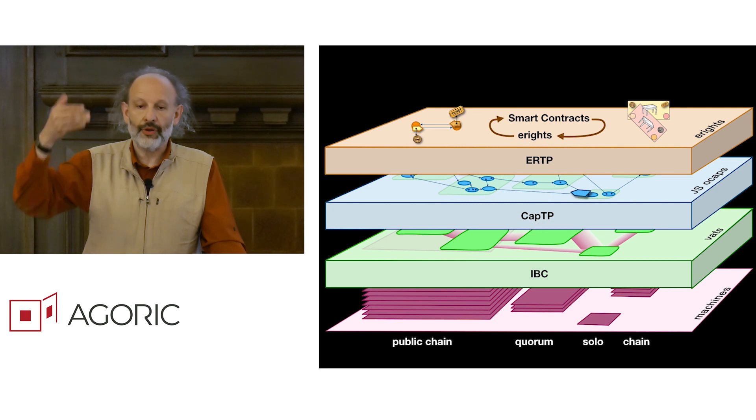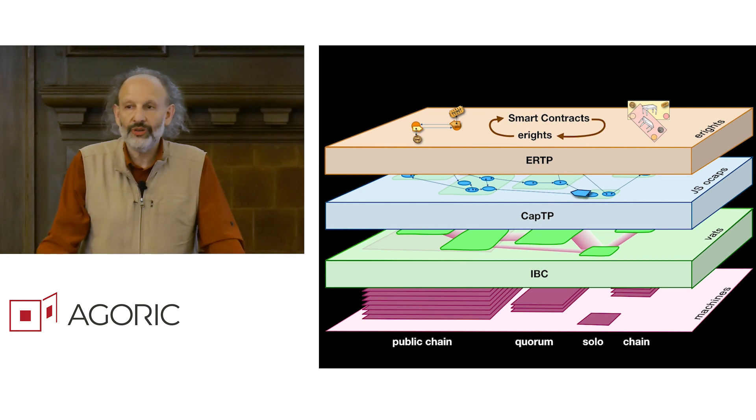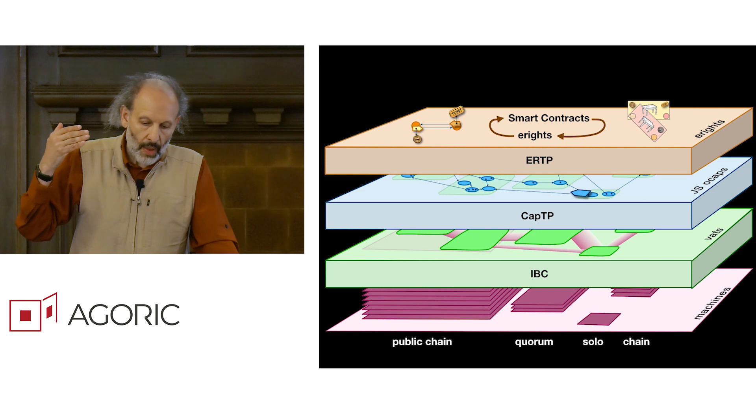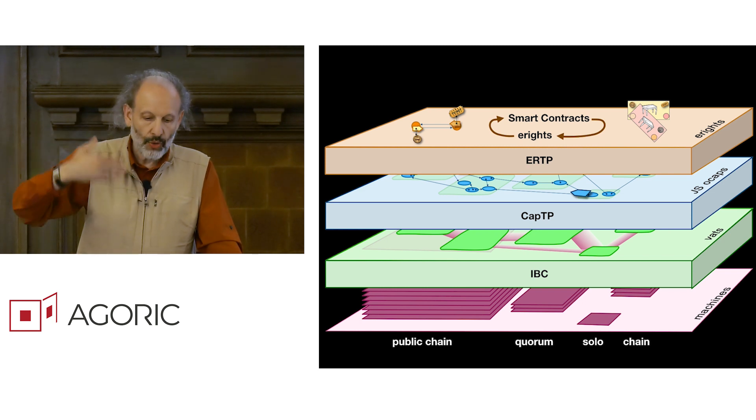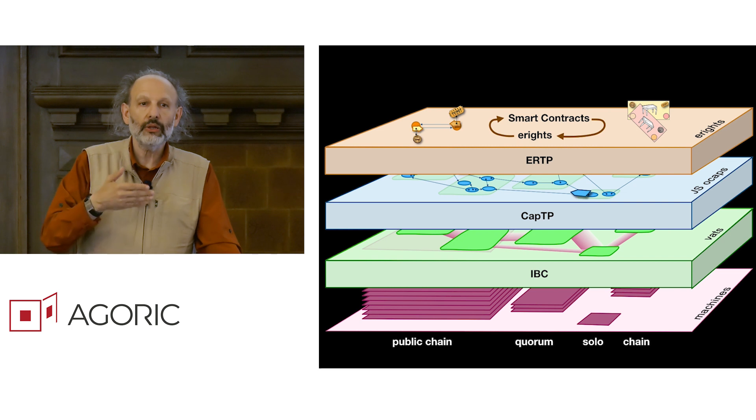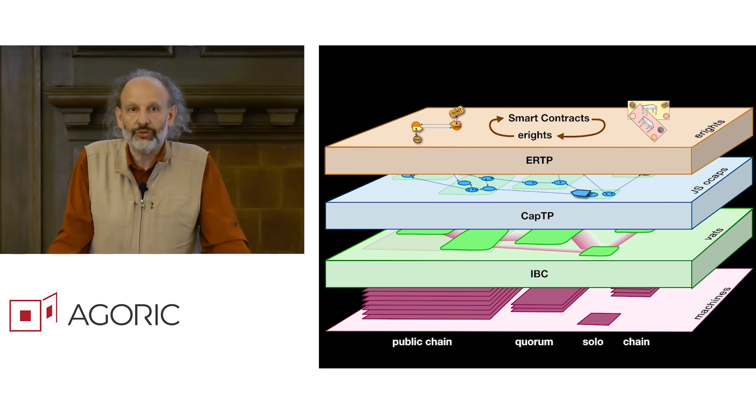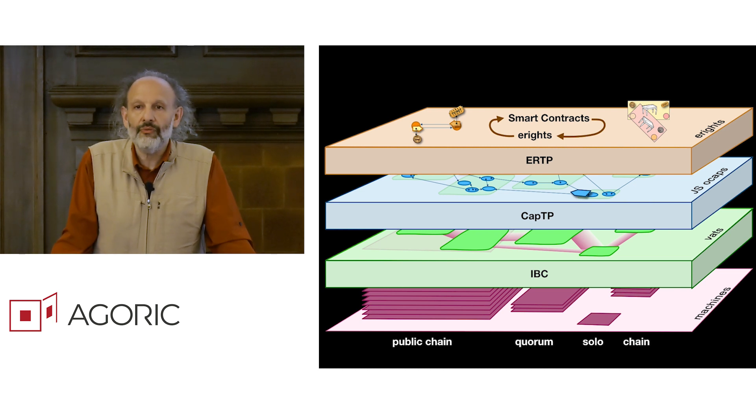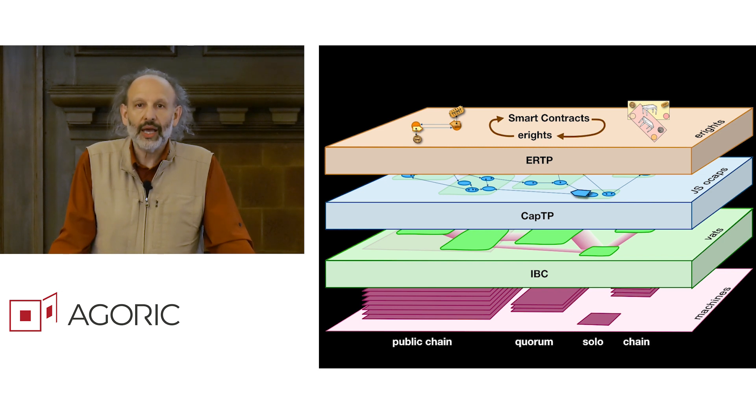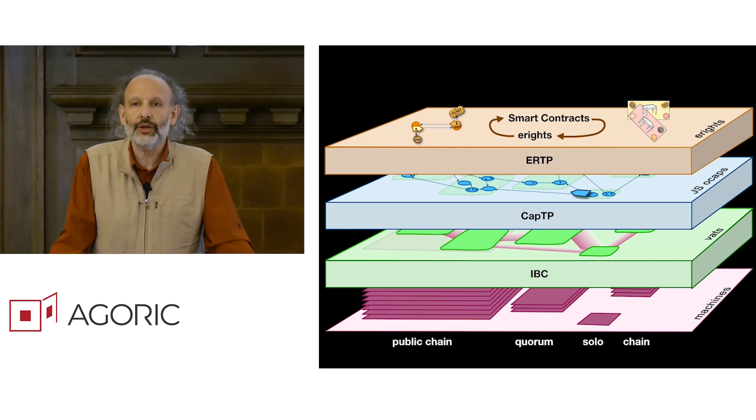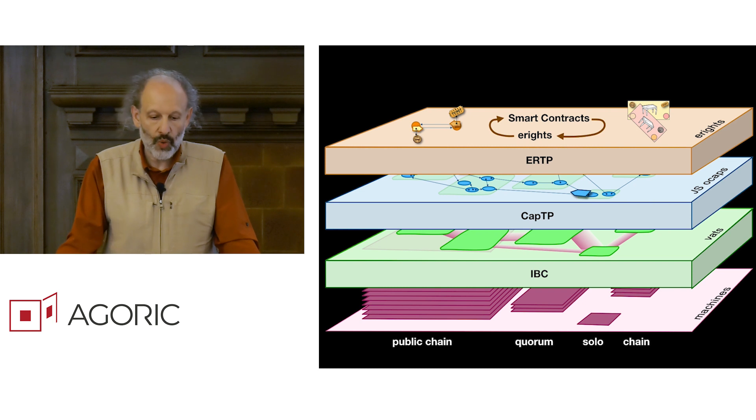These layers are held together by layers of protocol. The IBC layer, the inter blockchain protocol, builds these secure data pipes out of the system of separate machines. CAPTP, the capability transport protocol, builds the world of distributed objects out of the world of secure data pipes. And then ERTP is the electronic rights transfer protocol, which is now a set of object interfaces for expressing electronic rights in a generic fashion so that we can build highly reusable and composable contracts that can apply to a wide range of rights.